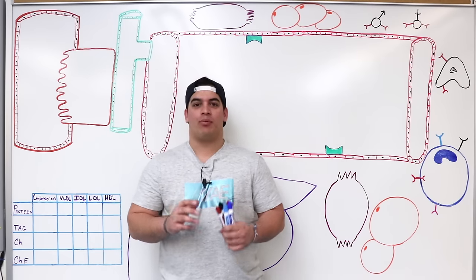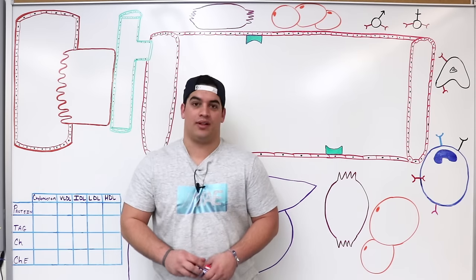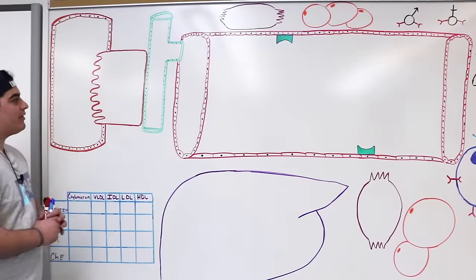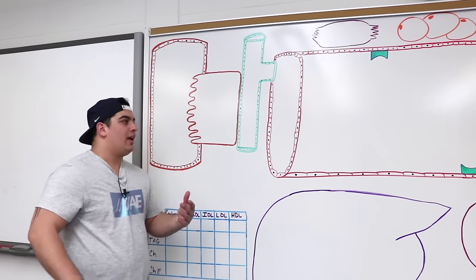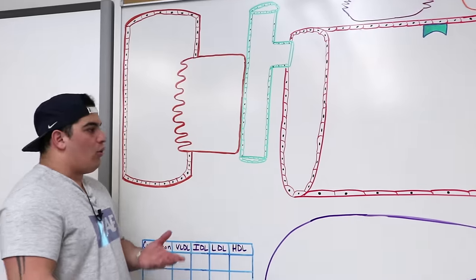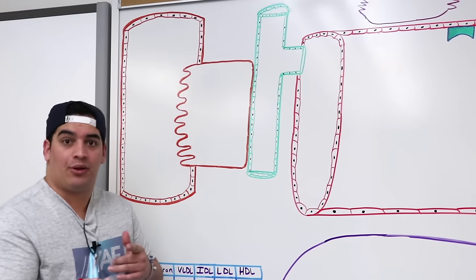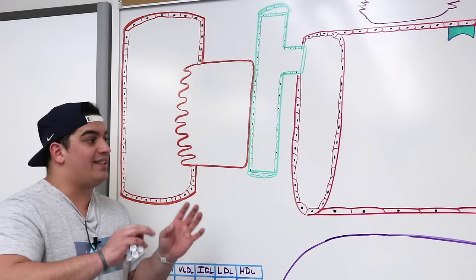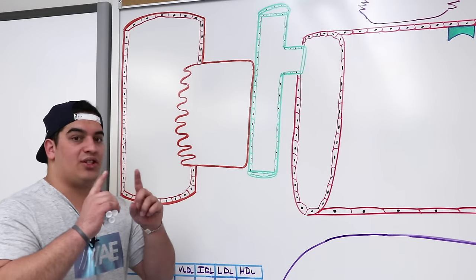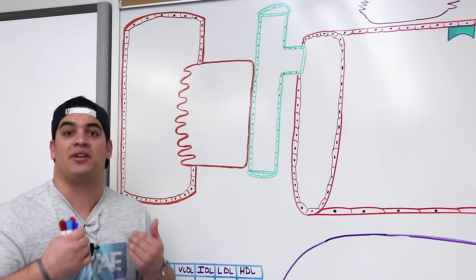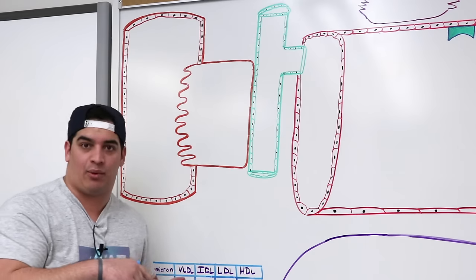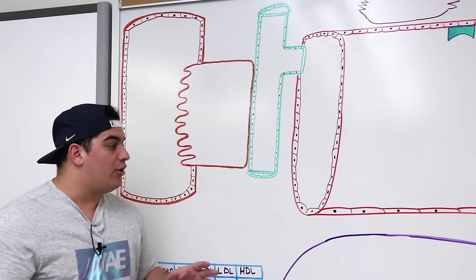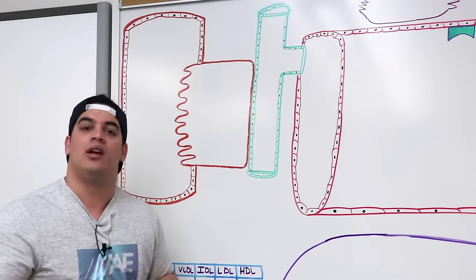In this video we are going to talk about lipoprotein metabolism. We have two different pathways: the exogenous pathway, which transports cholesterol, triglycerides, and different types of lipids to different tissues in the body — those lipid sources are coming from our diet. Then there is the endogenous pathway, where cholesterol and lipids are being synthesized in our body and transported to different tissues.